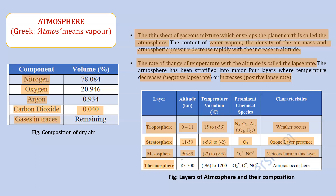The next layer is the thermosphere. It extends from 85 to 500 kilometers, and temperature varies from minus 96 to 1200 degrees Celsius — meaning temperature is rising again, giving it a positive lapse rate. Thermosphere is also known as the ionosphere, as it contains a large number of ions. Auroras occur in this layer — when charged particles collide with gases in Earth's atmosphere, they produce flashes of colorful light, which we call auroras.